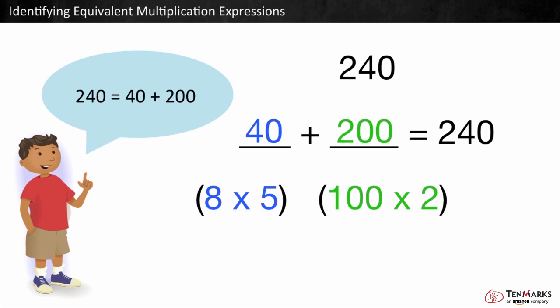We can write this as 8 times 5 plus 2 times 100. The parentheses around these multiplication expressions mean we should multiply those numbers first. 40 plus 200 is also equal to 240.